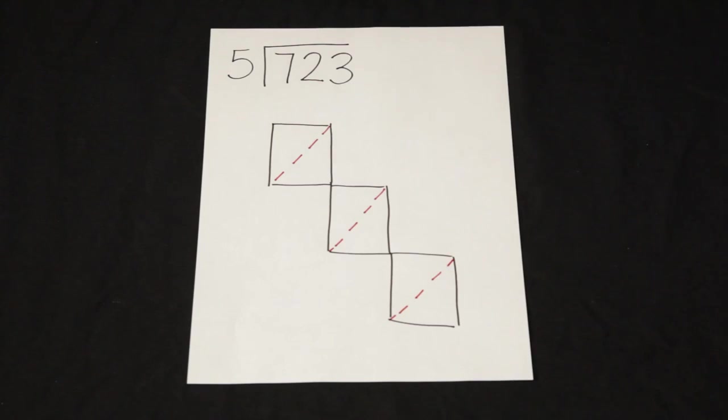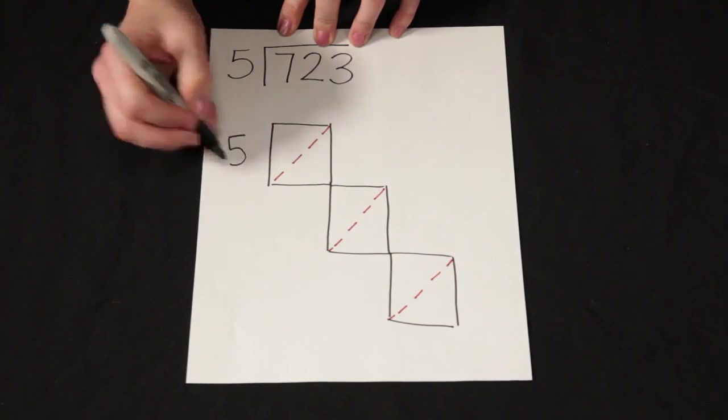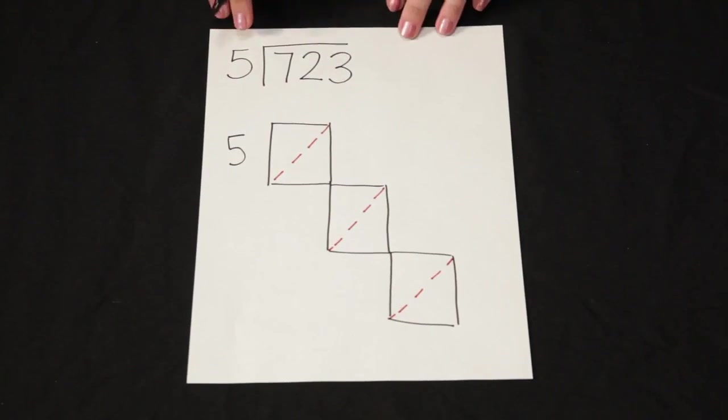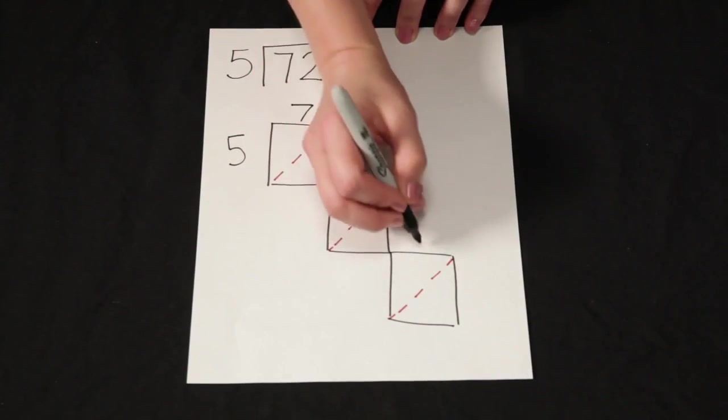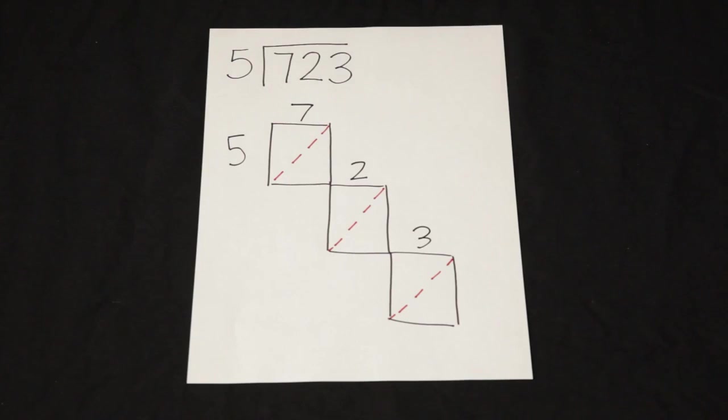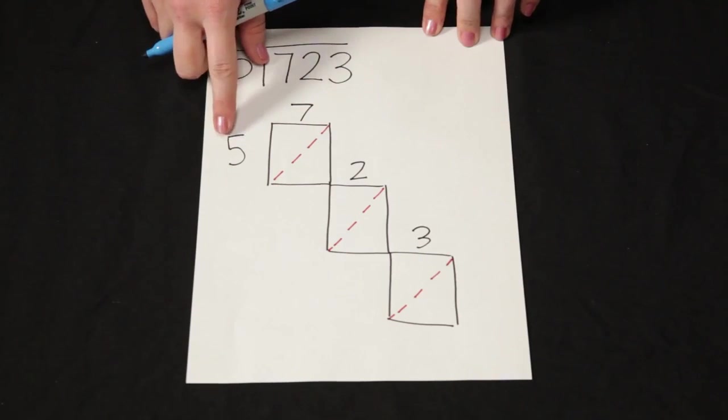Now my original problem was 5. I'm just going to go ahead and write my 5 here to the side of the first box. And I'm dividing 5 equally among 723 groups. So now I will ask myself how many times does 5 go into 7? Or how many groups of 5 can I make with 7? I can make one group of 5.